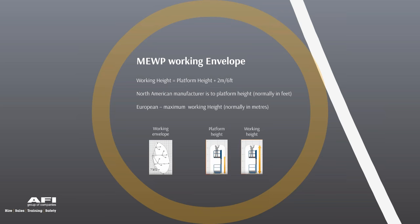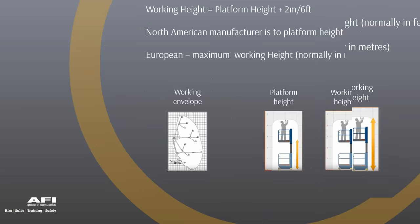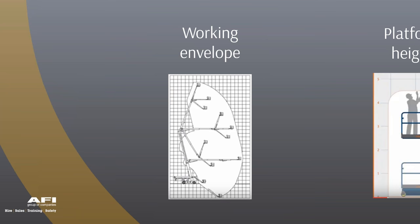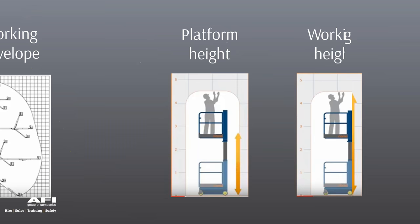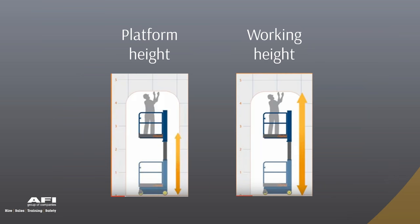If in doubt, ask for a free rental survey — we'll send a field sales representative to assess the job. North American manufacturers (Genie, Skyjack, JLG) quote machines to platform height, normally in feet — for example, 45 feet to the platform. European machines quote working height in metres. It's also important to understand up-and-over capability, and that some machines have negative reach below ground level.